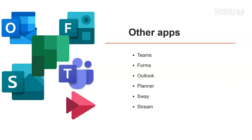Some of the other apps you might find useful: Teams you may well be using to communicate with your classmates or to attend lectures if you're doing that online. Forms can be useful if you need to take a survey for an assignment or do some research. Outlook is for managing your email. Planner can help you look after your tasks — you can put your tasks in here, give them priorities and track them. Sway is another app for making presentations. Stream holds videos, and To-do is related to Planner. You may well be using some of these.